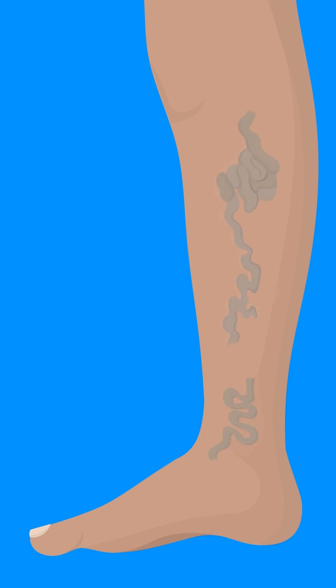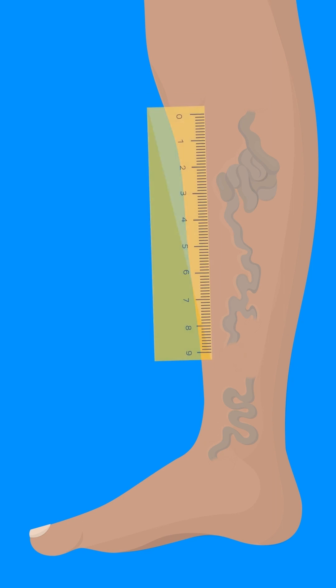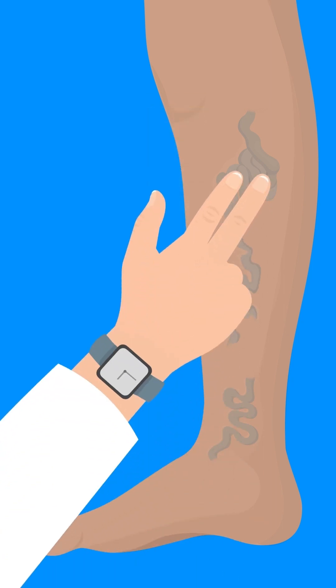Stem varices are the most advanced stage of varicose veins, and as you can see, they are large, tortuous, and palpable.